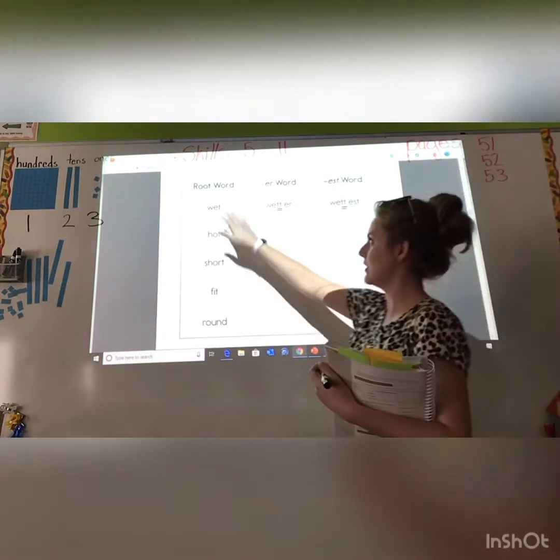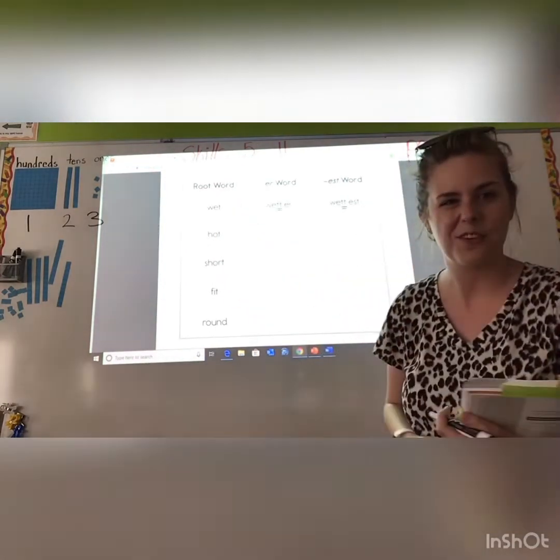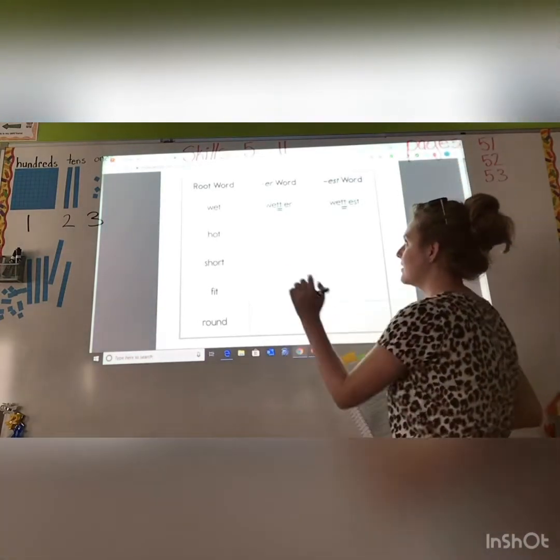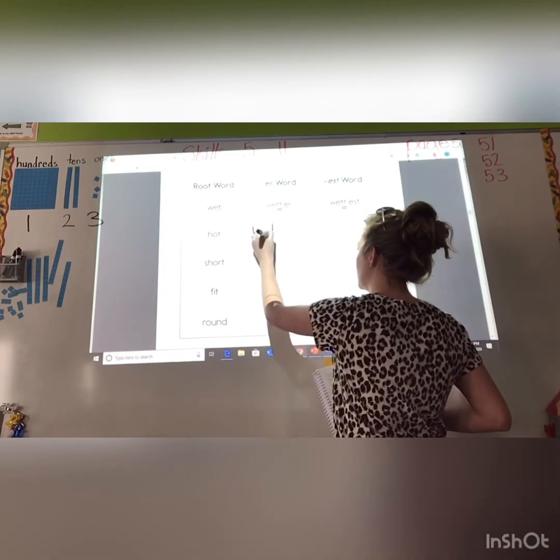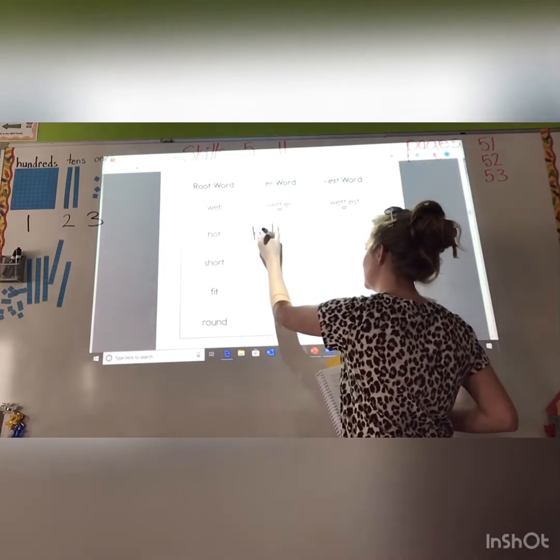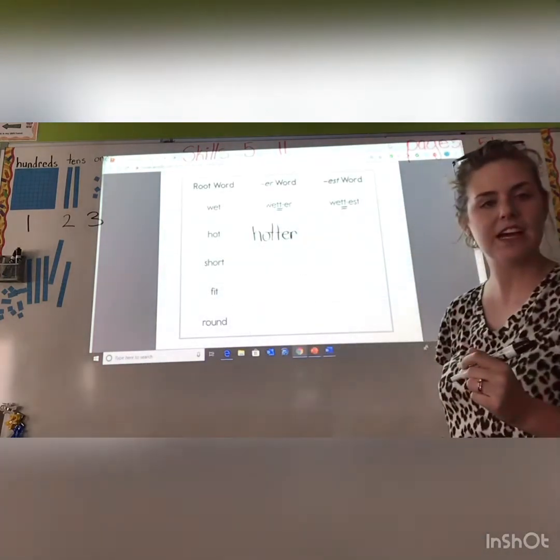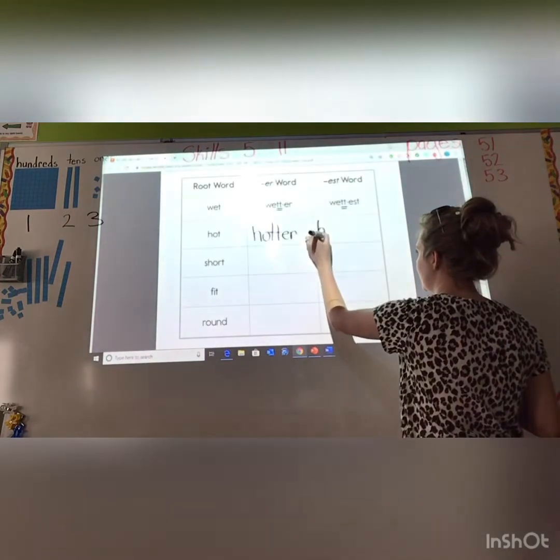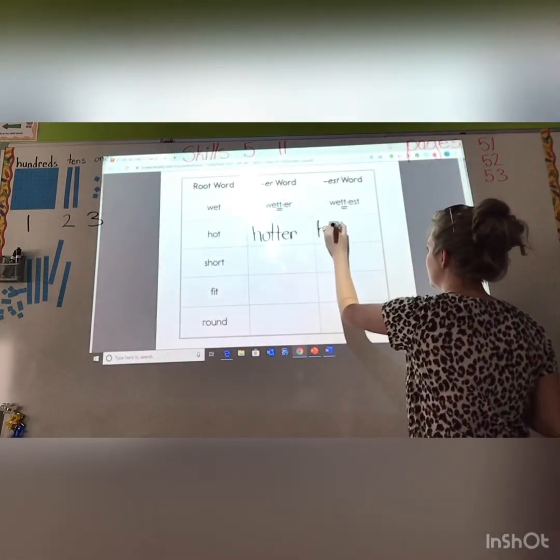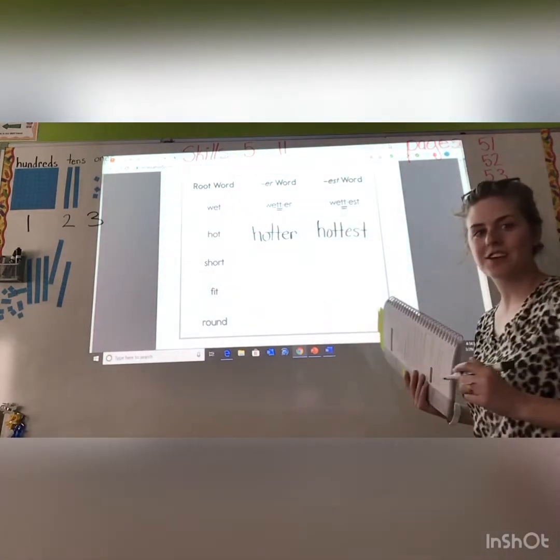Let's see if we can do that with the root word of hot. We'll do this one together. Okay, friends? So, we have hot. Hotter. Write the root word hot. Don't forget to double that T. E-R. Very good, friends. And then, we need to do hottest. Root word hot. Double T. E-S-T. Very good!